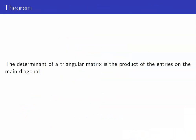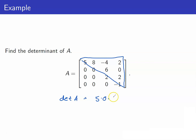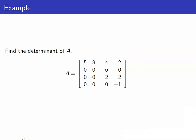For example, given an upper triangular matrix with diagonal entries 5, 0, 2, negative 1: since all entries below the main diagonal are zero, the determinant is just 5 times 0 times 2 times negative 1, which equals 0. In our next lesson, we will turn a matrix with not so many zeros into one with many zeros, so that the determinant will be easier to compute.